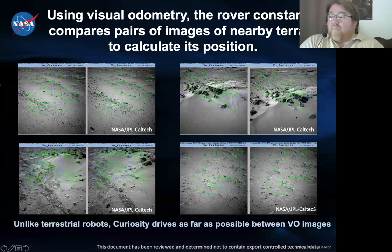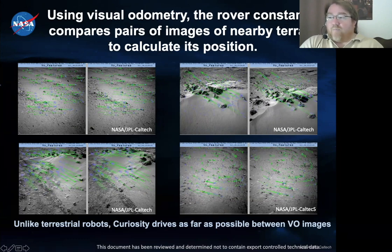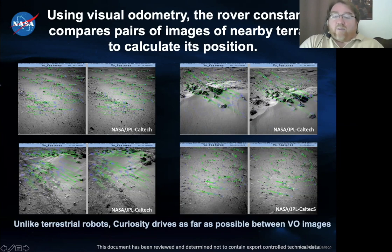Another robotics technology we have onboard is visual odometry. This is something that's now very common, but when we put it on 17 years ago it had not been as prevalent outside the robotics research community. Basically we look at the terrain, autonomously detect features in the local terrain, move typically about a meter, then grab another pair of images and do onboard processing to figure out the six degree of freedom pose change between the images. On most terrestrial robots, visual odometry happens at a high frame rate so you can track features easily because frames are close to each other.